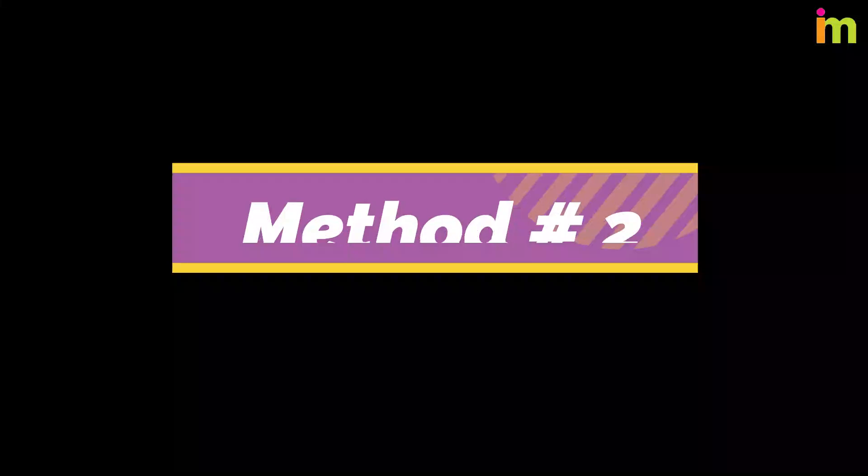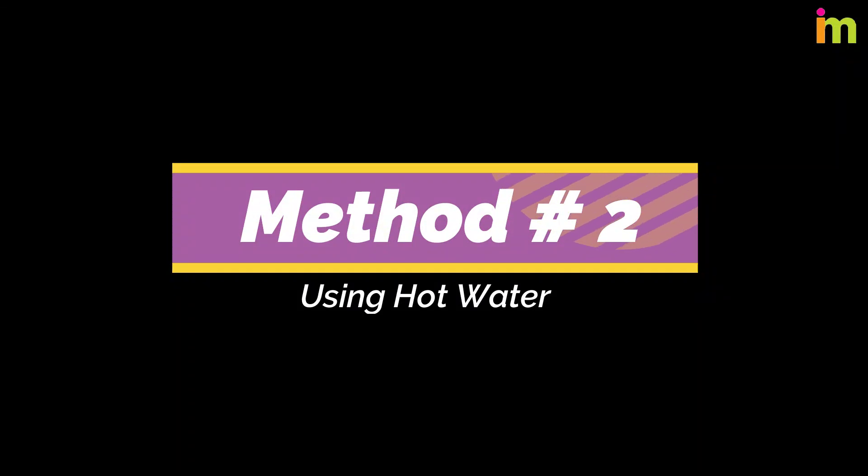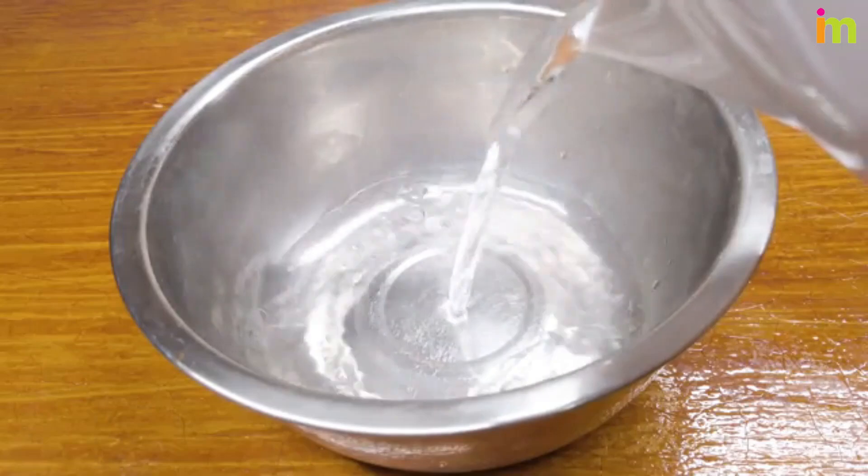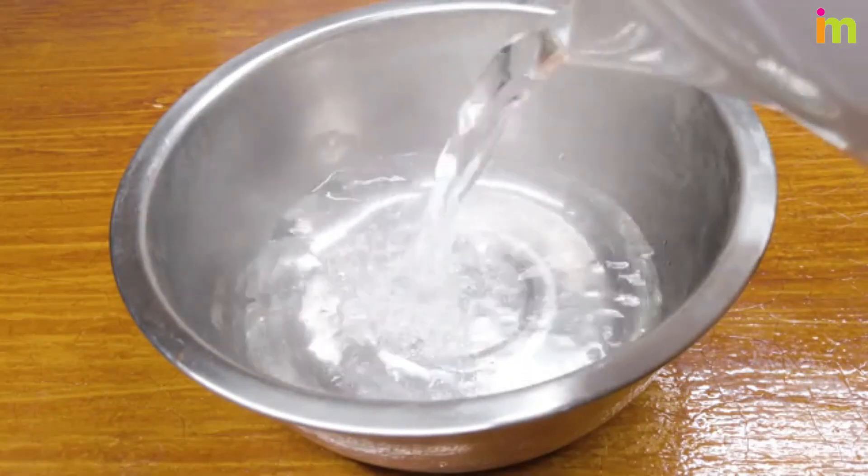Method Number 2: Using Hot Water. Reconnect small cracks in plastic using hot water. Fill a bowl or container with enough hot water to submerge the cracked piece of plastic.